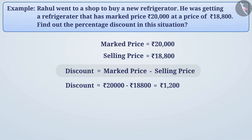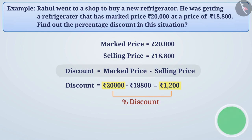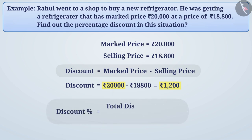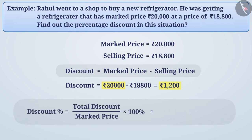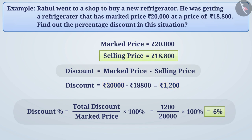Hence, the discount is 1,200 rupees on the marked price of 20,000 rupees. The percentage discount equals total discount divided by marked price, multiplied by 100%. Since the discount is given on the marked price, we consider the marked price as the base. That is 1,200 divided by 20,000, multiplied by 100%, which equals 6%. A discount of 6% has been given on the marked price of the refrigerator.